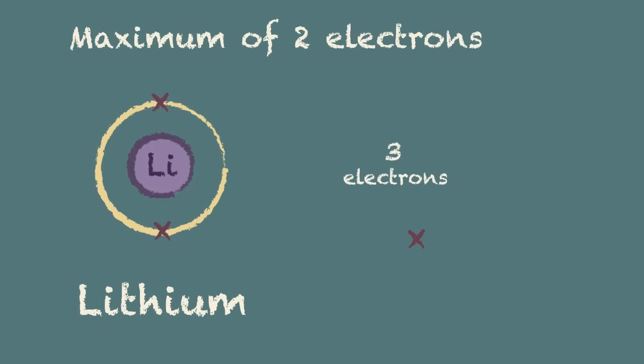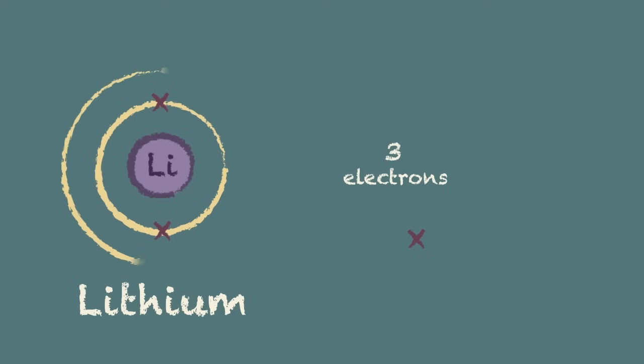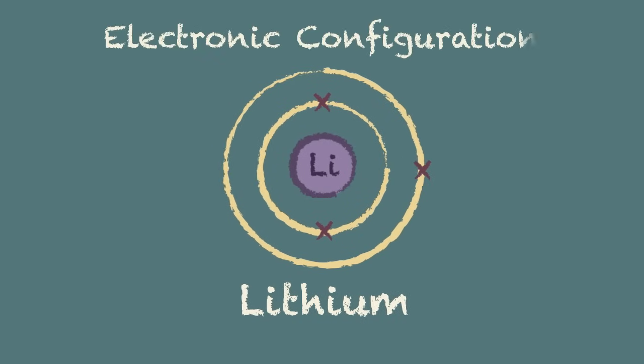The third electron therefore must go into the next shell which we draw as a larger circle around the outside of the first. And that completes the electronic configuration of a lithium atom.